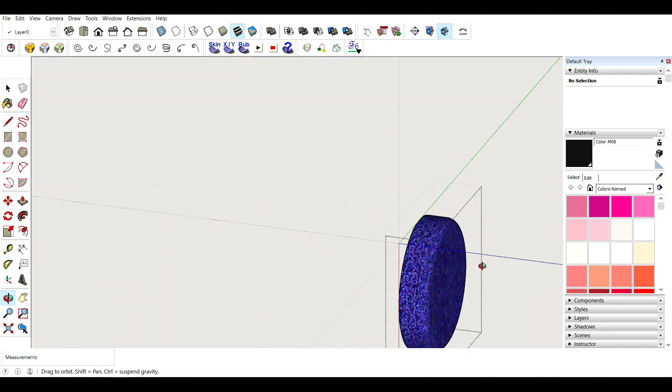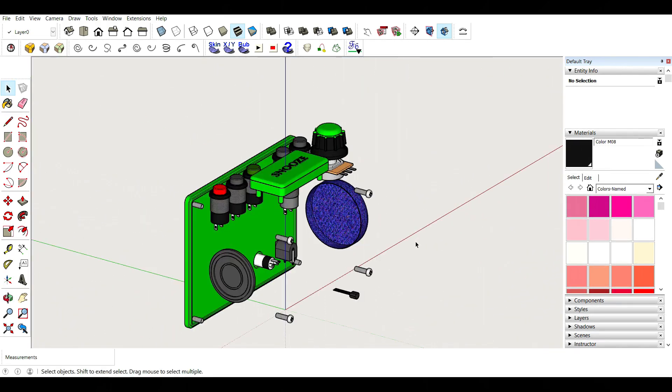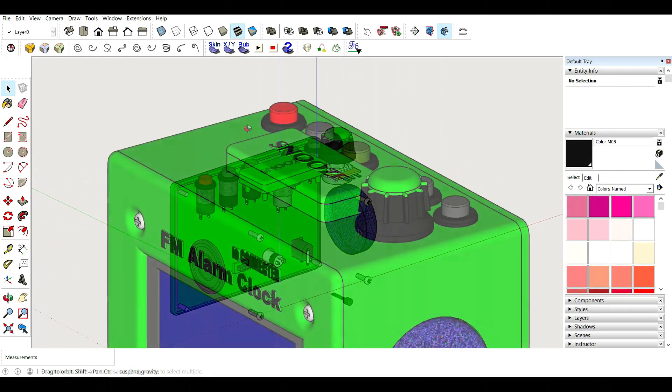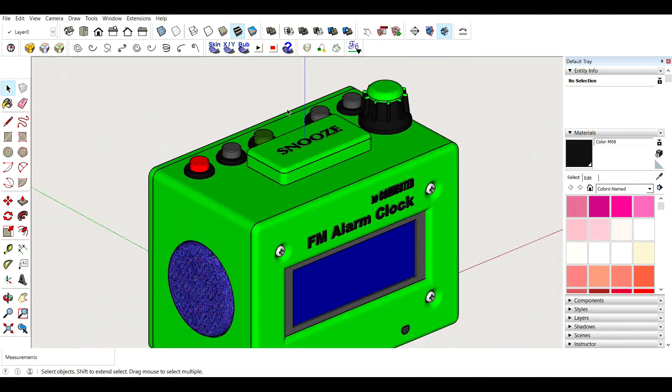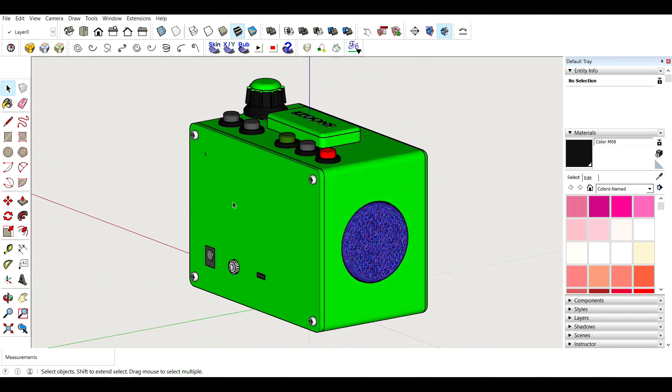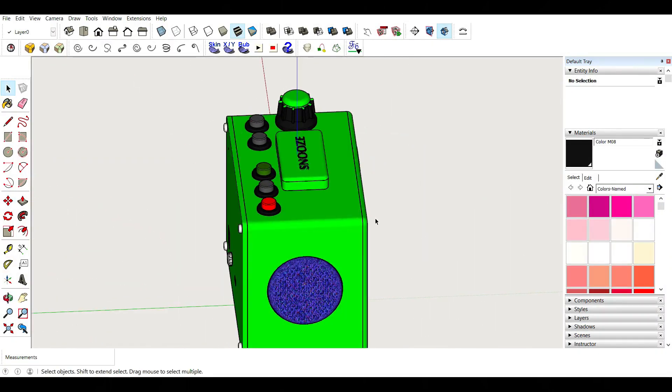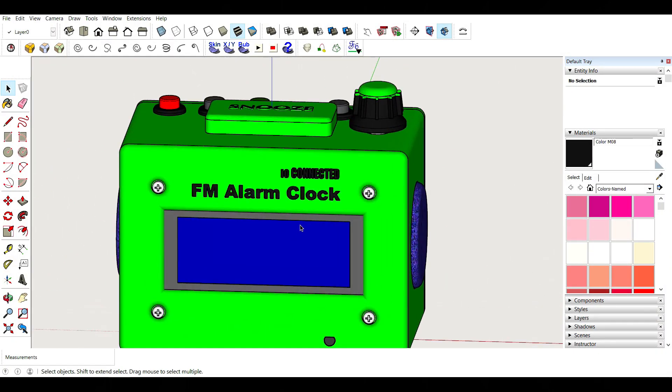Of course you can go ahead and design your own case for this project, but if you like this you'll find the .stl files along with everything else, because it's all open source like I promised in the beginning. So I'm going to turn on my 3D printer and print all these parts, and then we're going to put everything together into a finished product.